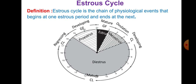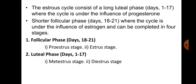You can see this chart showing the developing stages cycling through: ovulation, oestrus, proestrus, dioestrus, and the mature stage. These are the cycle periods. The oestrus cycle consists of a long luteal phase of 1 to 17 days, where the cycle is under the influence of progesterone - the hormone that maintains and runs these cycles. Then there is a short follicular phase of 18 to 21 days, where the cycle is under the influence of estrogen, completed in four stages.